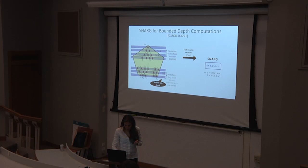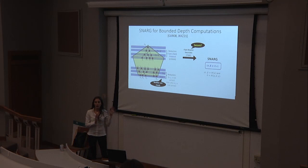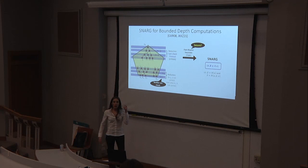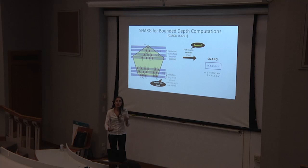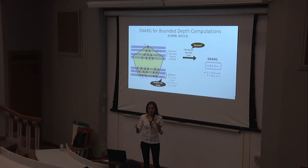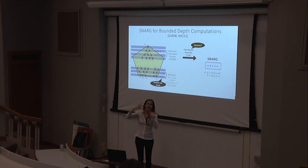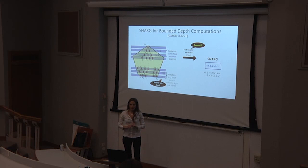The protocol works for any depth, but if the depth is very large, we lose succinctness — the verifier's work and certificate size grow with the depth. So if you want the certificate to be polylog T, the protocol is good for shallow circuits with polylog depth. The main question is whether the resulting SNARG — after applying Fiat-Shamir — is sound, and until very recently we did not know.